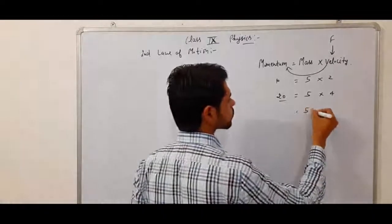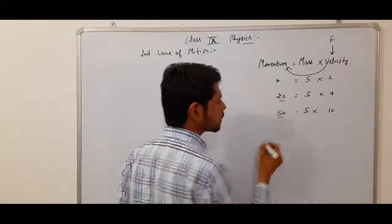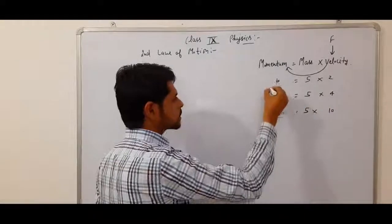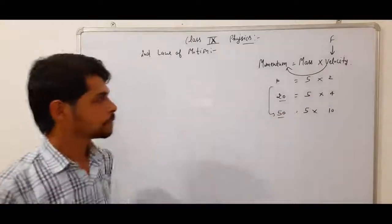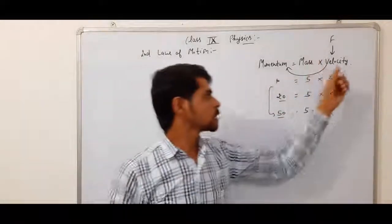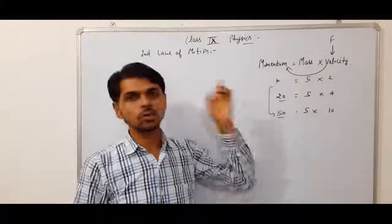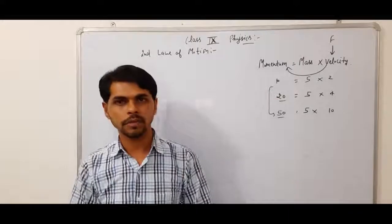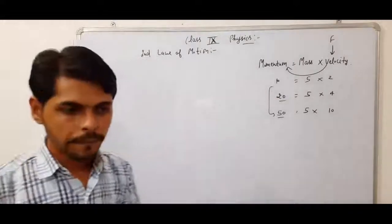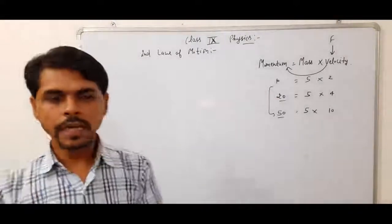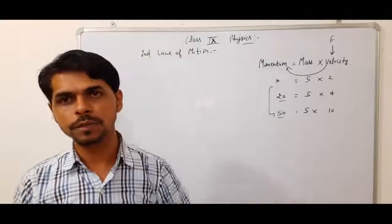For example, if velocity is 10, then momentum is 50. The amount of momentum will depend on both the mass and the velocity, meaning the amount of time will depend on force.